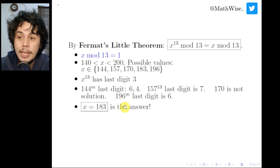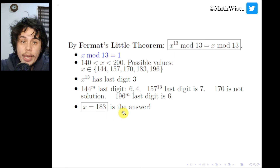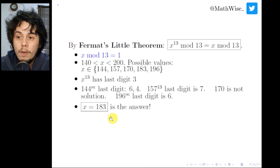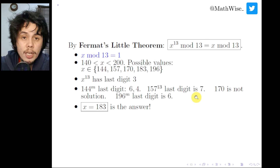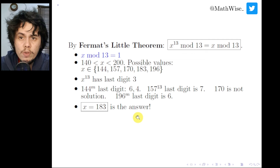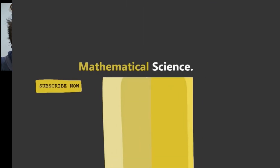So the answer is x = 183. This is how we solve this problem from the Iran Math Olympiad — a Diophantine equation involving a very large number. I hope that was useful. Thank you for watching, and see you in the next video.